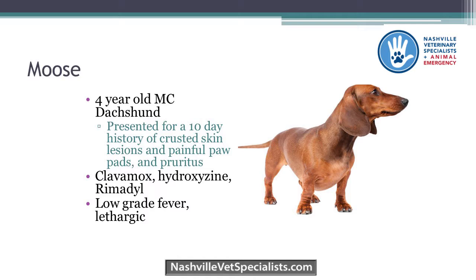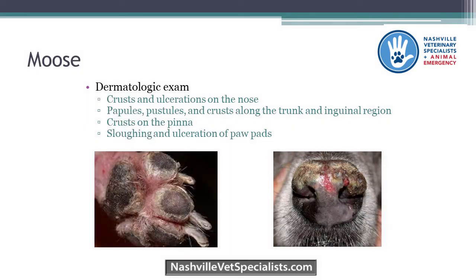He had a low-grade fever and was a little lethargic, not eating as well as normal. On dermatologic exam, he had crusts and ulcerations of the nose with depigmentation and loss of the normal cobblestoning appearance of the nasal planum. He also had papules, pustules, and crusts along the trunk and inguinal region, crusts on both the concave and convex aspects of his pinna, and hyperkeratosis with fissuring and ulceration of the paw pads, explaining his lameness.